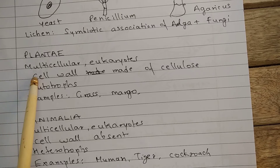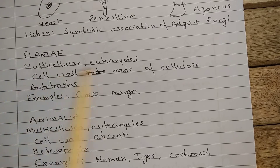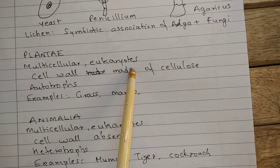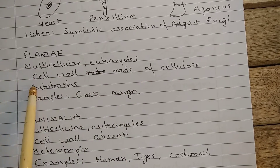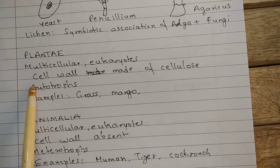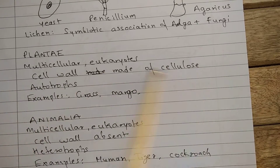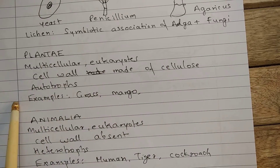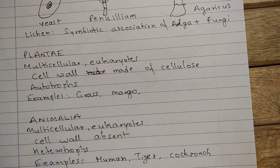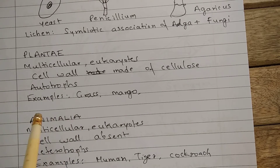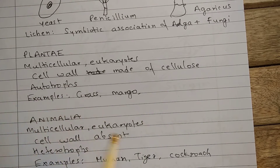Plants are multicellular eukaryotes. Cell wall is made of cellulose and these are autotrophs. You will read about the plants in detail in the next video. Examples are grass, mango, and you can count so many examples.